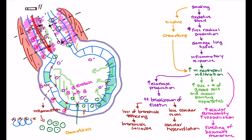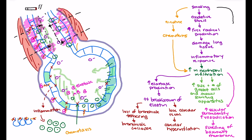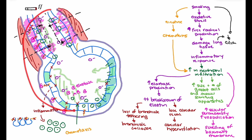Patients also have a challenge getting mucus out of the lungs because smoking paralyzes cilia, and damage to the lung tissue leads to replacement of cilia-producing cells with other cells. So for two reasons we see loss of cilia and loss of cilia function. The problem is that cilia play an important role in sweeping mucus from the lower parts of the lungs up to the upper airway so we can cough it out. This patient is stuck trying to cough mucus out from really low in the lungs, which can be very challenging.